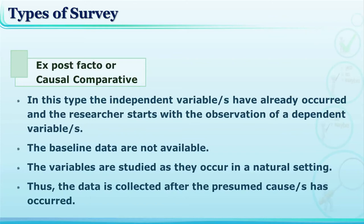In causal comparative or ex post facto research, the independent variable has already occurred and the researcher observes the dependent variable. It is different from experimental research in that there is no manipulating of the independent variable. Since baseline data is not available, the researcher only observes the cause after the effect has already taken place.